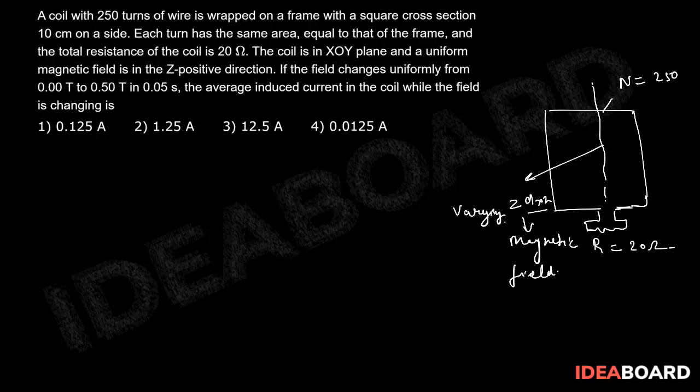So we know that I induced will be equal to E induced divided by R, and that would be the value. So we can write E will be delta phi upon delta T times 1 upon R.